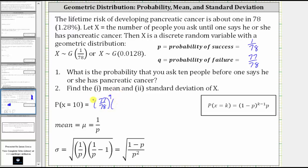And then times the probability of success, or the probability someone has pancreatic cancer, which is 1/78. Looking at the formula on the right, notice k equals 10, which is why we have one minus p, or q, raised to the power of nine times p.